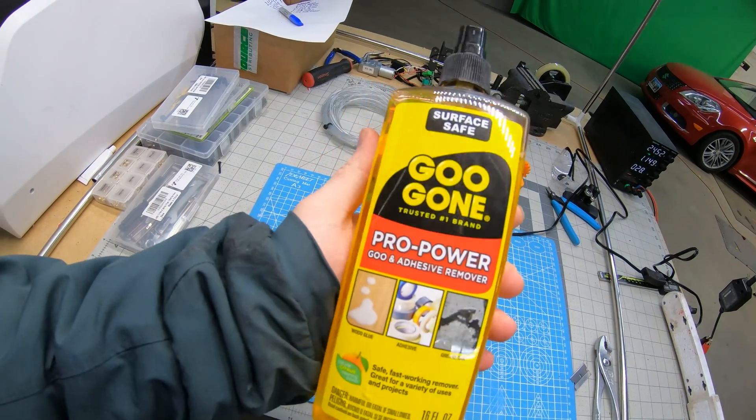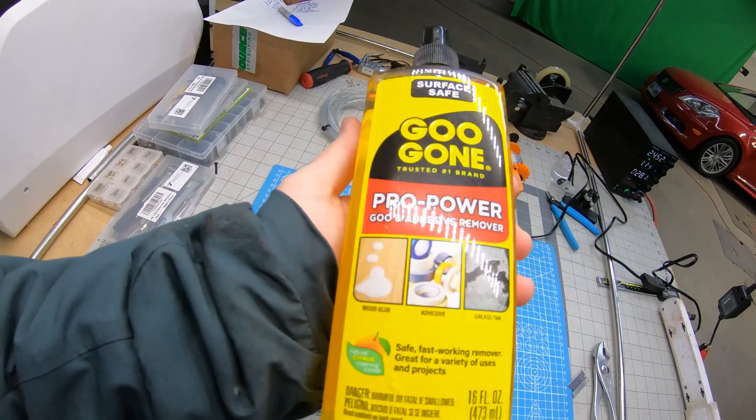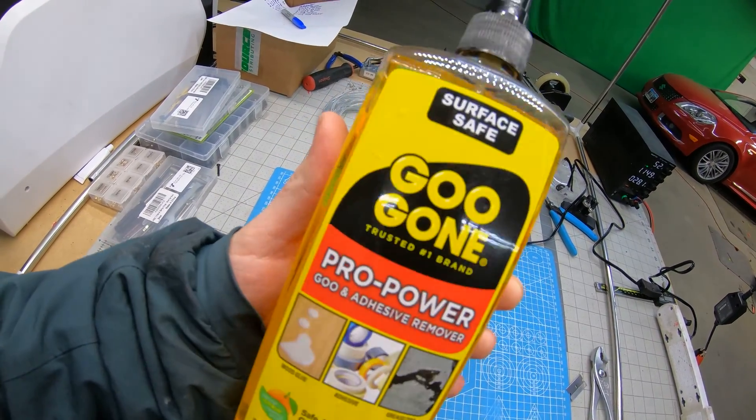After this, I like to hit the bottle with some Goo Gone. You can get this at Walmart for like five bucks. It'll remove any leftover adhesive. You don't want that going through your 3D printer.